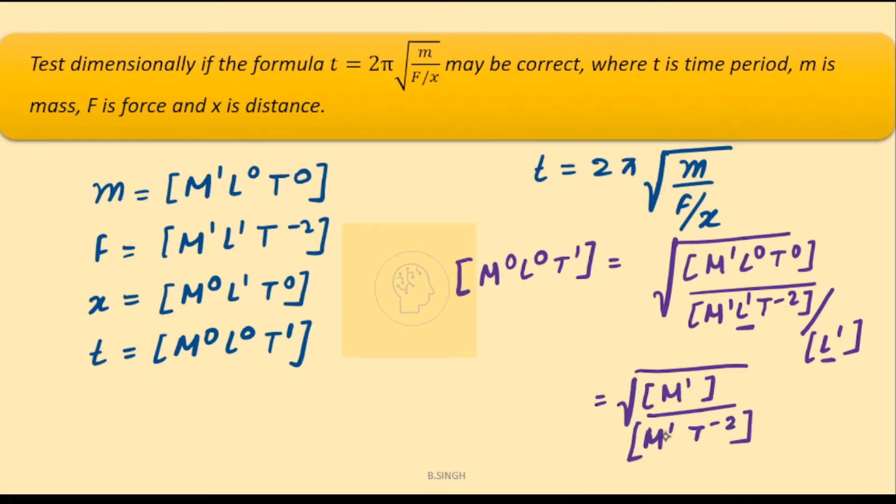So when we take this on the top, this will be simply root under t to the power 2, and root of t to the power 2 is simply t to the power 1.